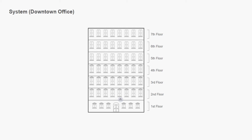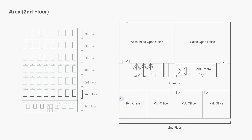That brings us to our next term, which is area. Area is a logical division of a system. You utilize an area to divide a system into more manageable pieces for configuration. We'll divide our downtown office system into areas according to floor, and we'll be concentrating on the second floor. We have the associated floor plan on the right.